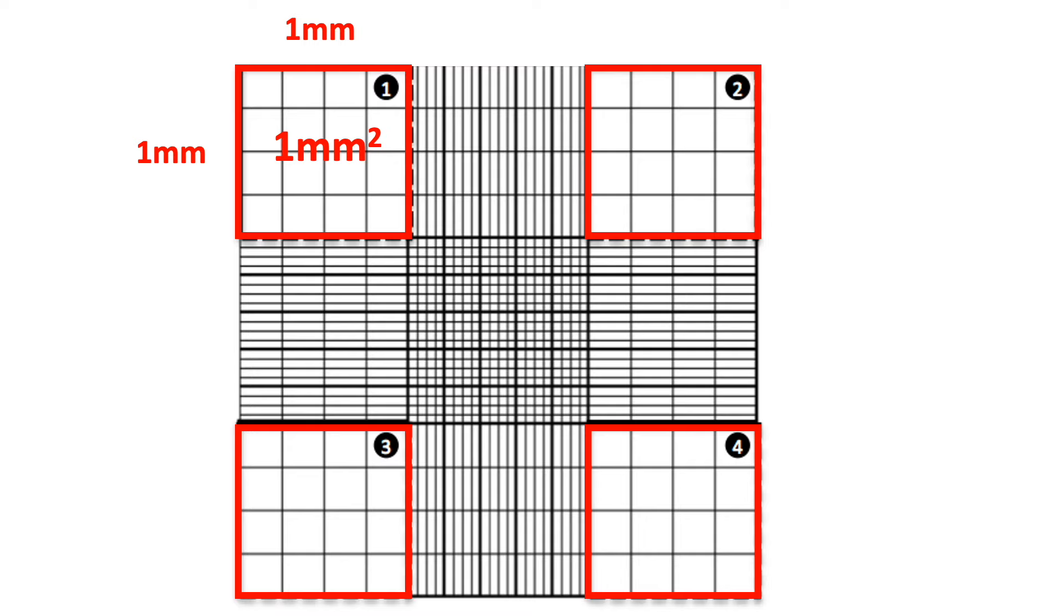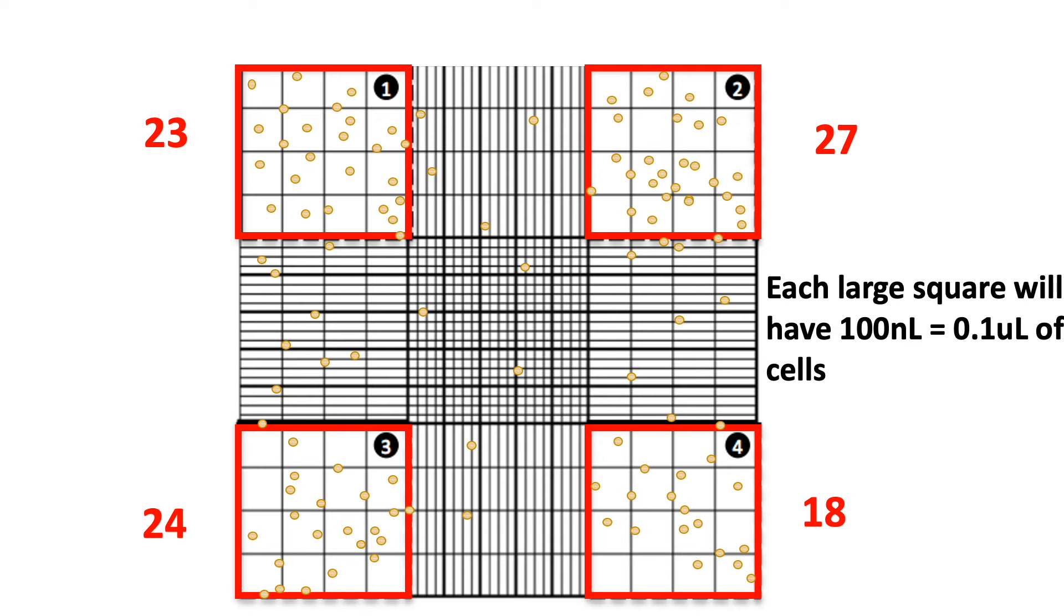When we place a glass cover slip on top of the hemocytometer, each of these squares can contain up to 100 nanoliters, which is equal to 0.1 microliters of cell suspension. So let's load our hemocytometer with cells and count only the four corner squares.